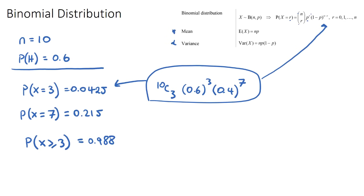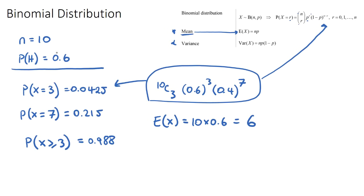The other two formulas are the mean and variance. The mean is the same as the expected value. It says: if we do ten trials each with probability 0.6, how many heads do we expect? That's just n × p = ten times 0.6 = six. So we expect six heads if we flip the coin ten times.